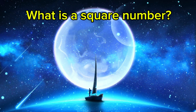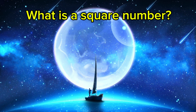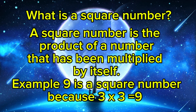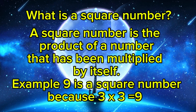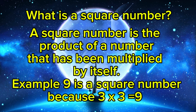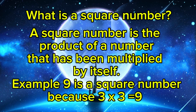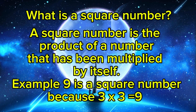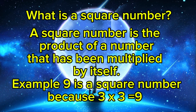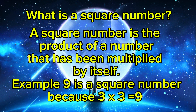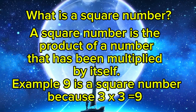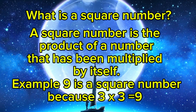And now, let's define square number. A square number is the product of a number that has been multiplied by itself. Example, 9 is a square number because 3 times 3 is equals to 9.